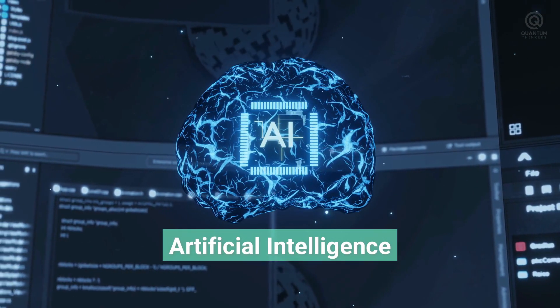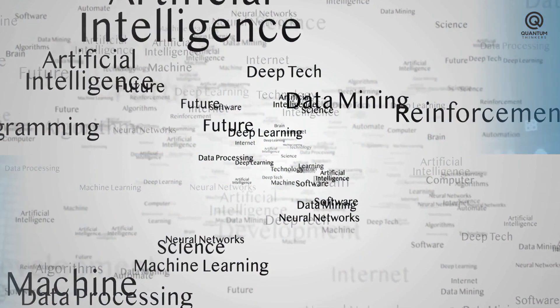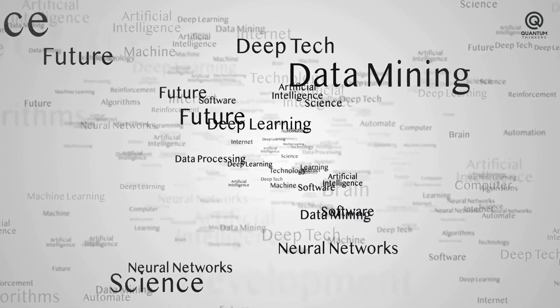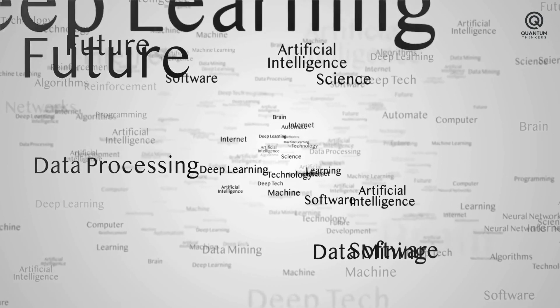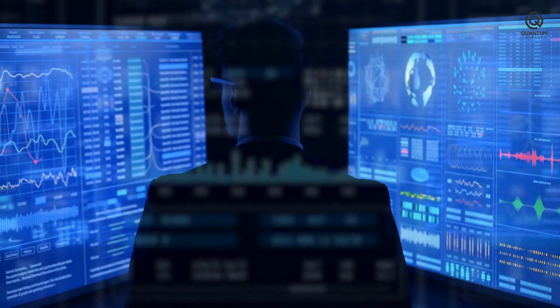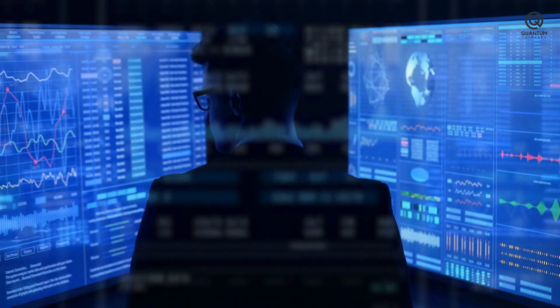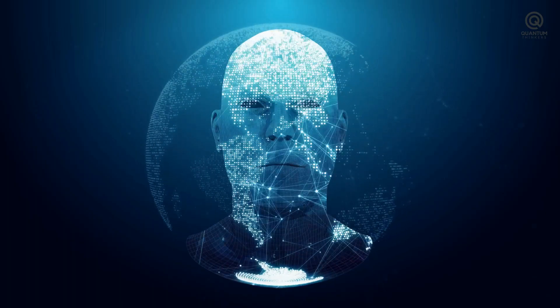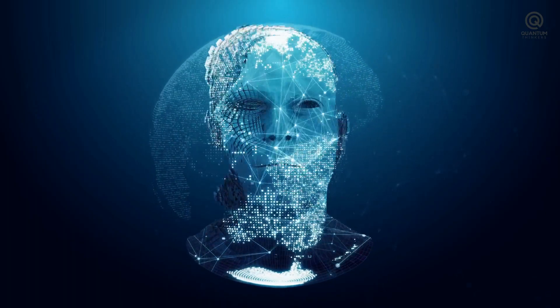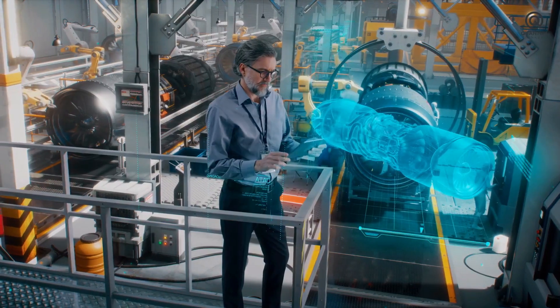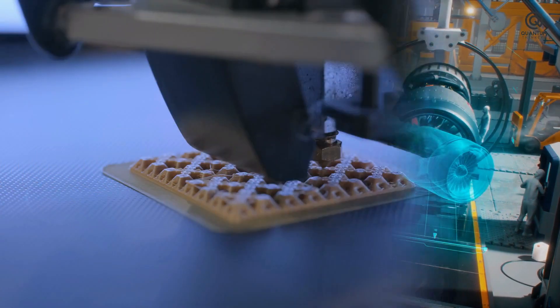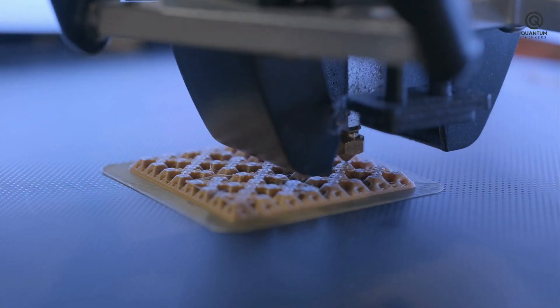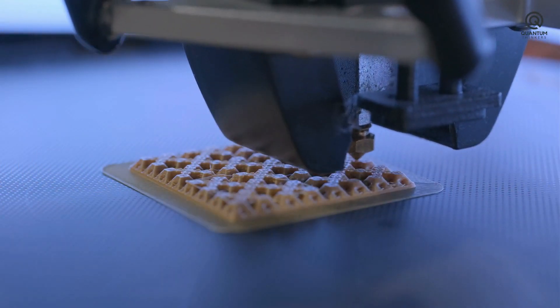Artificial intelligence is a revolutionary field of computer science that aims to create intelligent machines capable of reasoning, learning, and problem-solving akin to human cognition. It stands as one of the most promising and transformative technologies of our era. At its core, AI seeks to replicate human intelligence, enabling machines to understand, interpret, and respond to complex data and tasks. Within the realm of AI, two prominent branches have emerged: machine learning and deep learning.